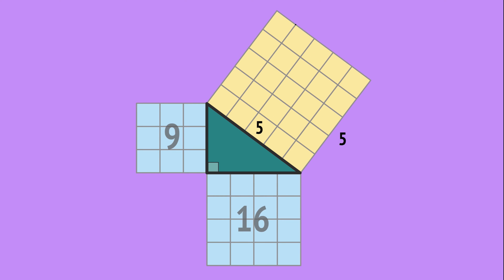And the longer side makes a 5 by 5 square, so an area of 25 square units. Adding the areas of the smaller squares gives the same area as the larger square. That is, that the sum of the squares of the shorter sides equals the square of the longer side.